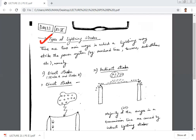There are mainly two types of lightning strokes. There are two ways in which lightning may strike the power system. Power system comprises overhead lines, towers, substations, transformers, alternators, and many more. There are many ways in which lightning may strike the power system, but the two ways will be direct stroke or indirect stroke.